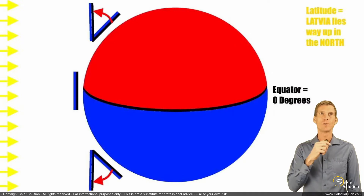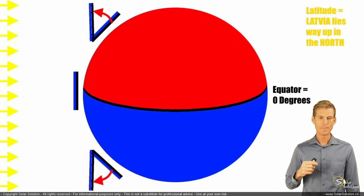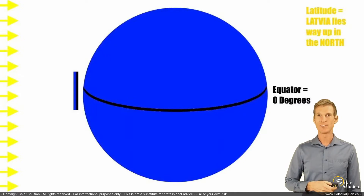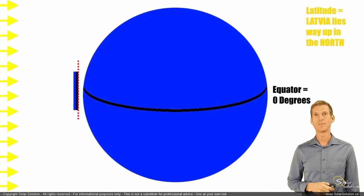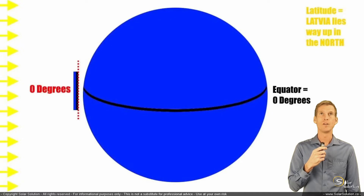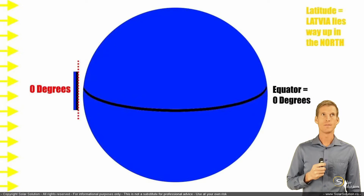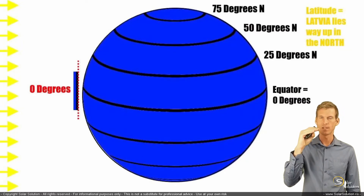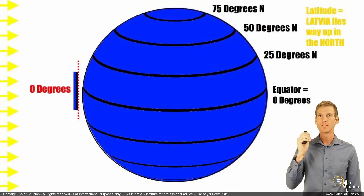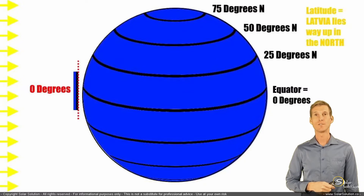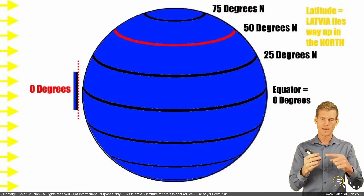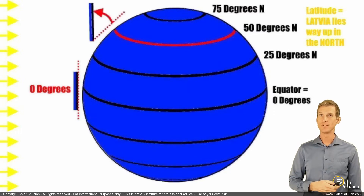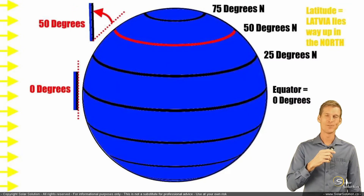To simplify it: if you are located right on the equator at zero degrees latitude and you want to install your solar module perpendicular to the sun to capture the most solar power, you would install it at a solar angle of zero degrees. Compare that to being on the northern hemisphere — the further north you are, the higher your latitude: 25, 50, 75, etc. If you are exactly at 50 degrees north, you would need to install your solar module at an angle of 50 degrees. So the optimum solar angle is identical to your latitude.